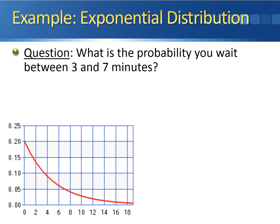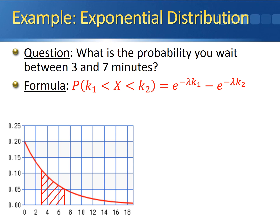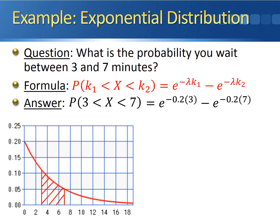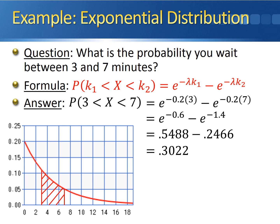For the probability of waiting between three and seven minutes, draw the distribution and shade the region between three and seven. Use the equation e to the negative lambda times k1, minus e to the negative lambda times k2, where k1 equals 3 and k2 equals 7. This gives e to the negative 0.6 minus e to the negative 1.4, which is 0.5488 minus 0.2466, for a final probability of 0.3022.